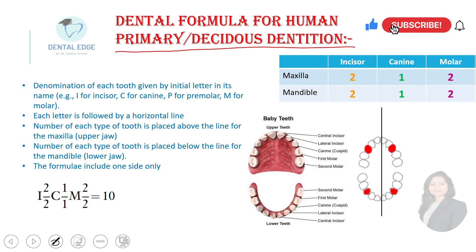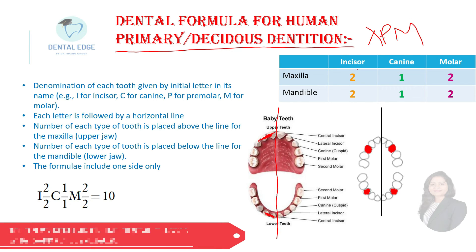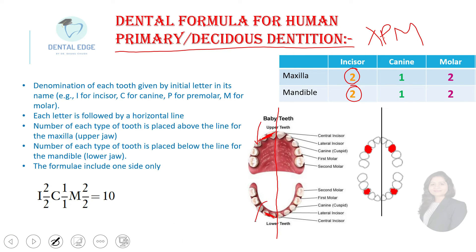Now let's see the primary or deciduous dentition. Remember that in primary teeth there are no premolars — this is an important point. Looking at one side, in primary teeth there are two incisors in maxilla and mandible, one canine in maxilla and mandible, and two molars in maxilla and mandible.